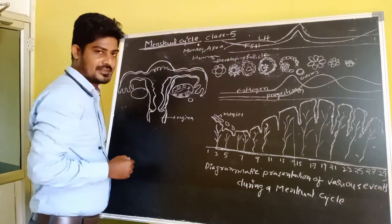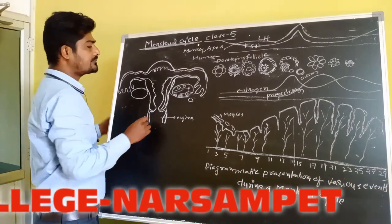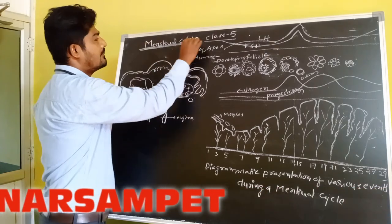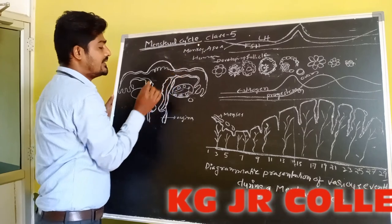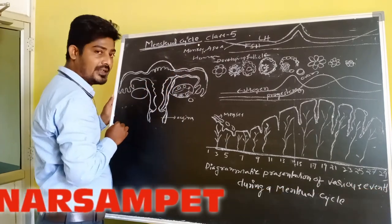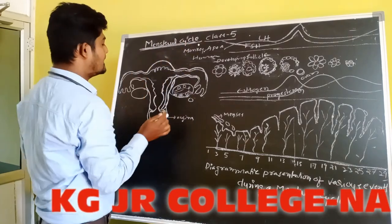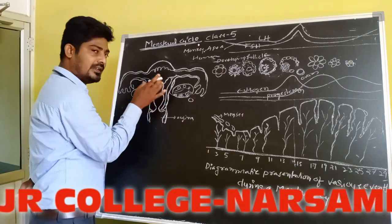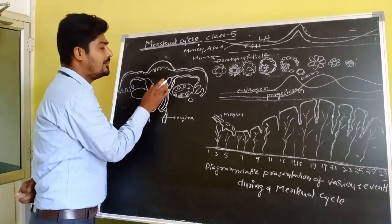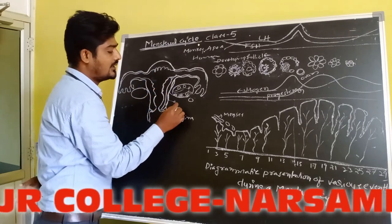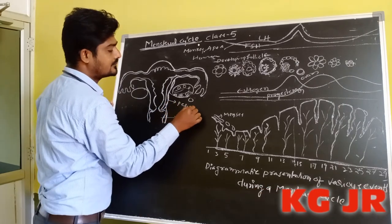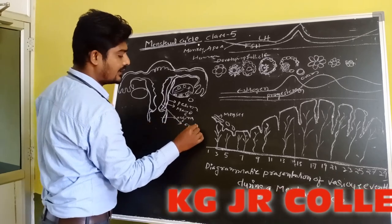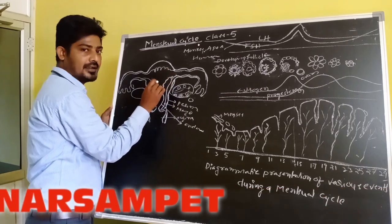The word Menstrual Cycle is applied to the cyclical changes in the endometrium of the uterus in a month. The female uterus is composed of 3 layers: the outer layer is called perimetrium, the middle thicker layer is myometrium, and the inner thinner layer is endometrium. The cyclical changes happen within the endometrium.